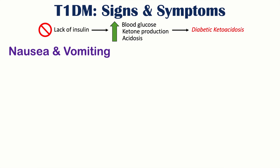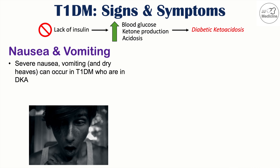Diabetic ketoacidosis also causes severe nausea and vomiting, where patients may vomit so much they are left with dry heaves. This is caused by acidemia. In severe cases, vomiting can lead to a Mallory-Weiss tear — a superficial tear in the esophageal mucosa with blood in the vomit — or even a full rupture through the esophageal wall, causing Boerhaave syndrome.